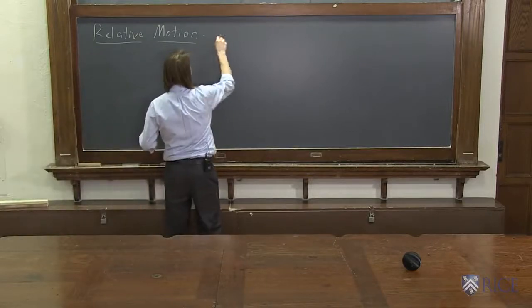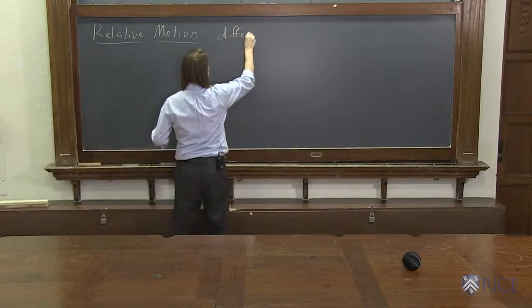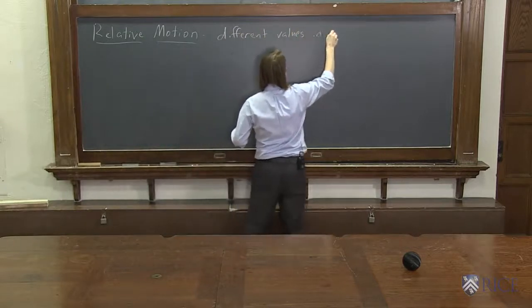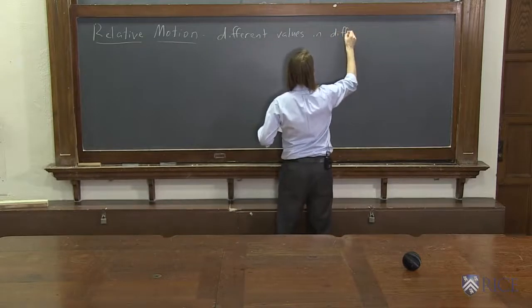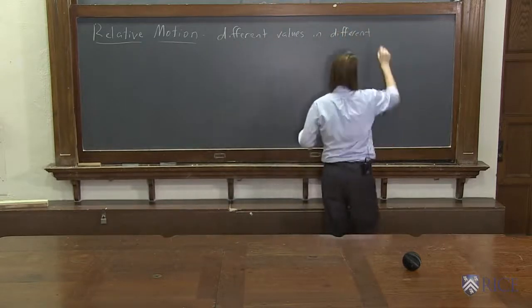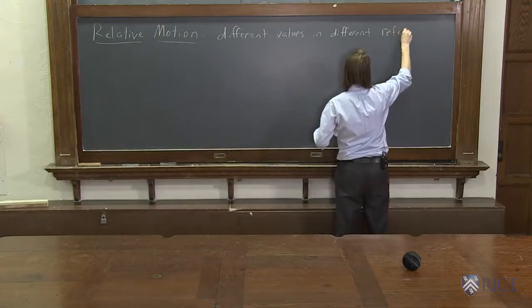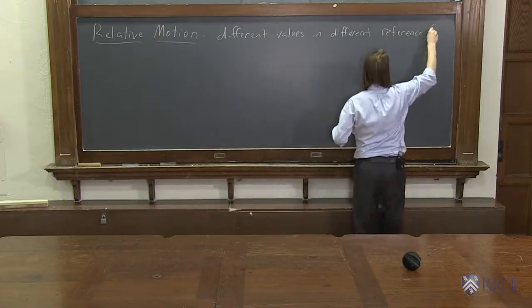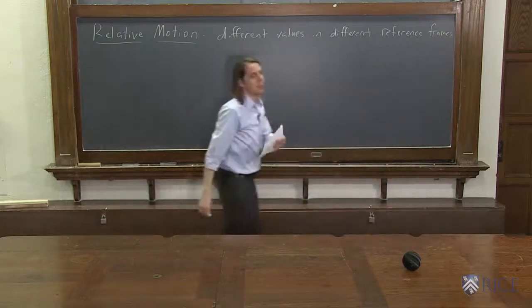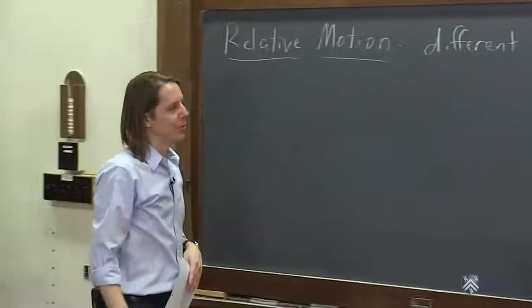My simple definition would be different values in different reference frames. So the thing is moving how it's moving. It's just how we describe it would depend on our frame of reference.